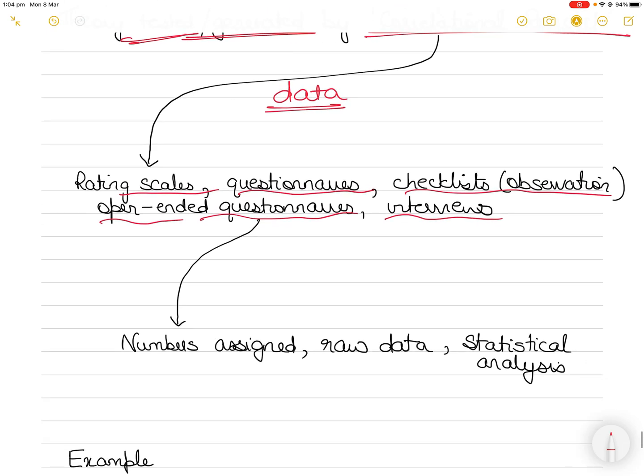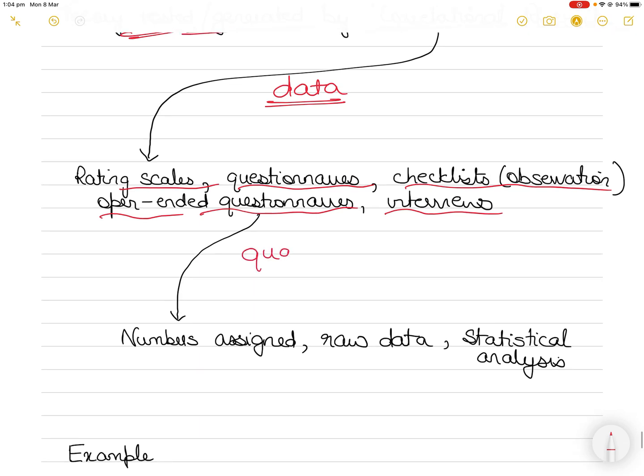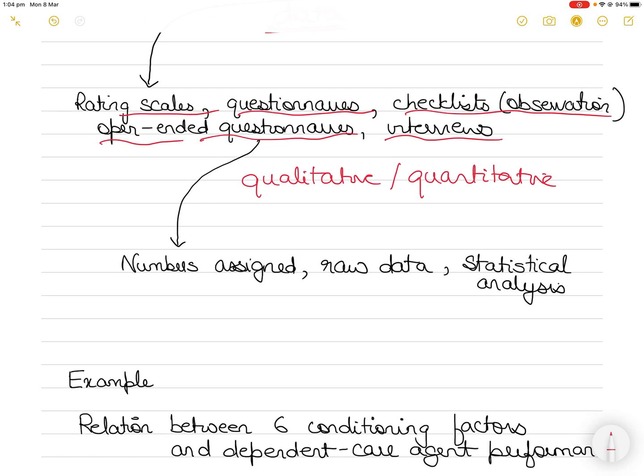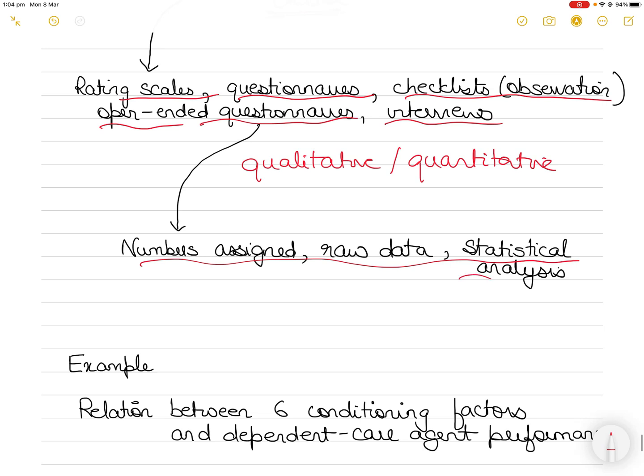So instruments used for correlational research can generate either qualitative data or quantitative data. It is up to you as a researcher what kind of data you want to generate. When quantitative explanations are desired and qualitative data have been collected, you can attach numbers to the raw data so that you can carry out some kind of statistical analysis. You can have agree, strongly agree, disagree, neutral, strongly disagree, and you can have one, two, three, four, five assigned to the scale.